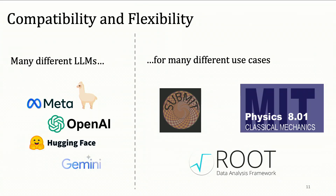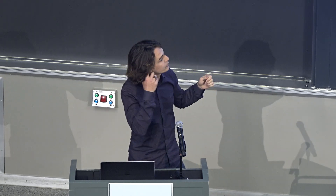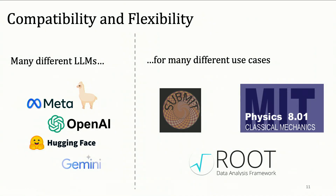Going through our three pillars: we're compatible with many different large language models — the big ones like OpenAI and Gemini, but also open source models. If you want to be fully contained, you can plug in Meta's Llama 2 or any other model on Hugging Face. We're also very flexible to many use cases. Our first use case was SubMIT, a high performance computing cluster of the physics department here at MIT. We manage their help desk, draft answers for them, and also gave a chatbot for novices new to high performance computing.